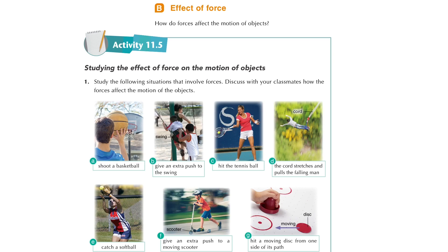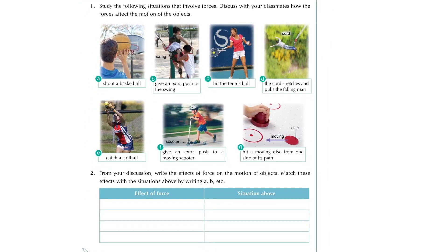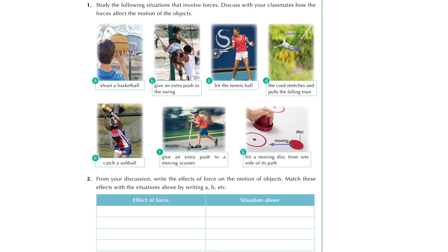Now here we have seven examples to represent the effect of the force on the motion of objects. We can group them into four different types of effects. The first type of effect—we can think of it.